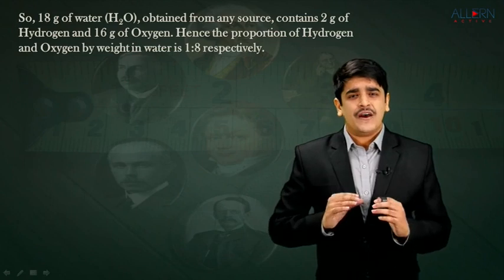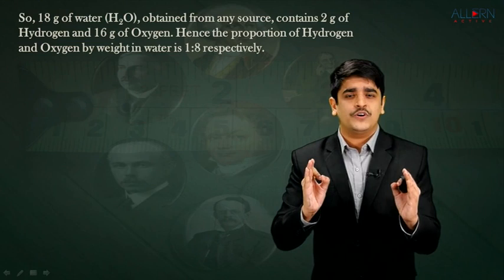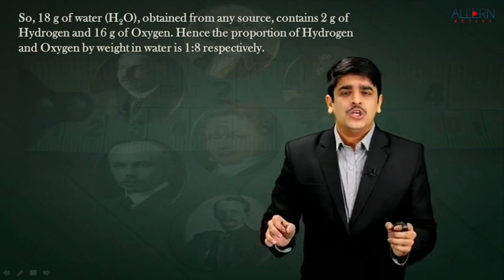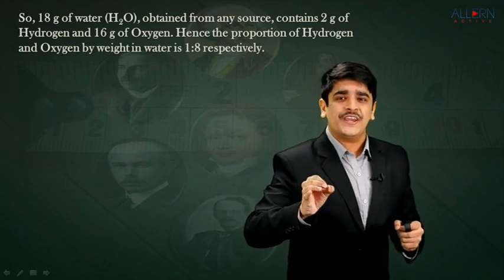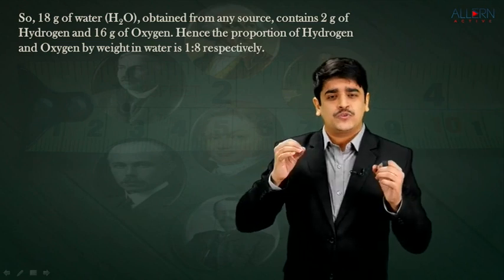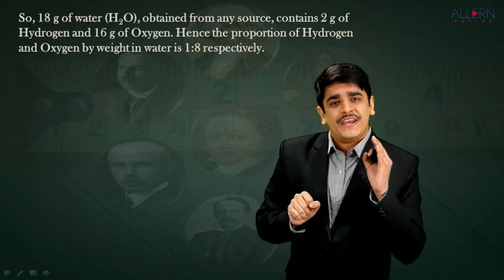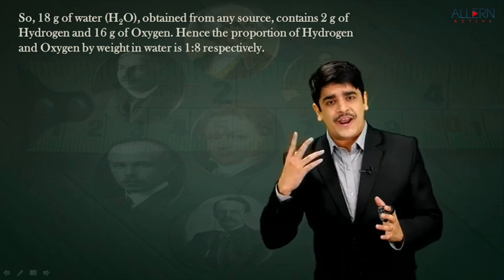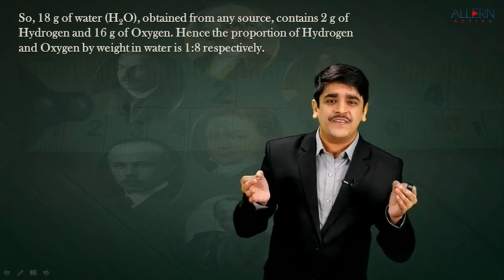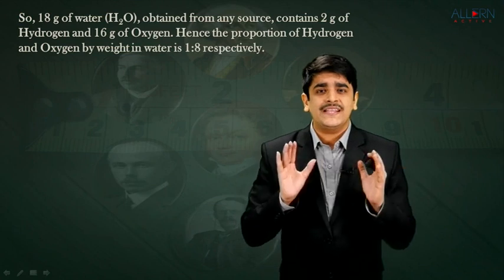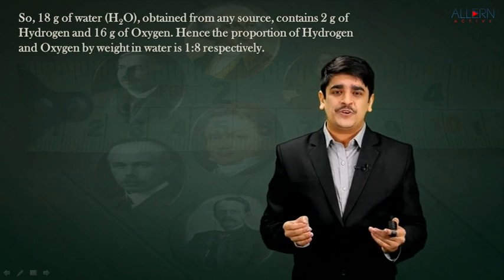We have similar examples to discuss in detail. Let us discuss water first. If we have 18 grams of water, given by the formula H₂O and obtained from any source — whether river water, ice water, or sea water — the proportion of hydrogen and oxygen by weight comes out as 1 is to 8.